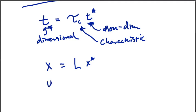And we can think of some other quantity, like a velocity being related to some characteristic velocity times some non-dimensional velocity, et cetera.